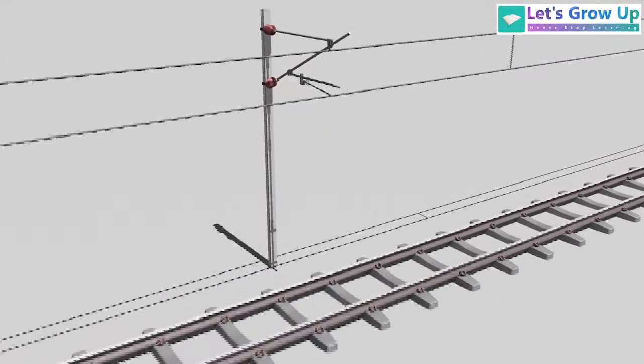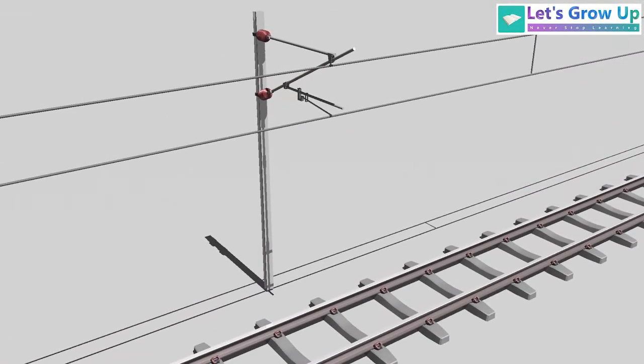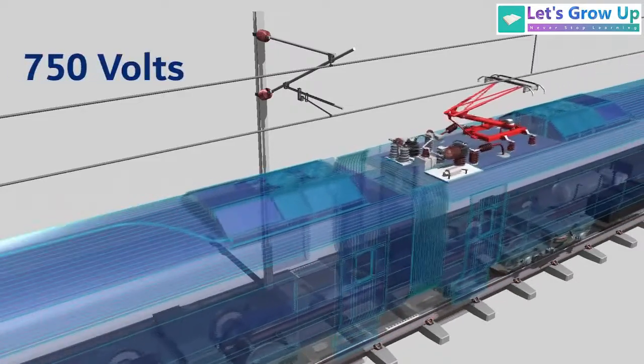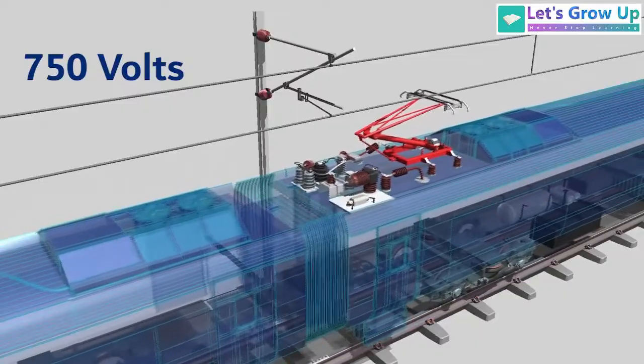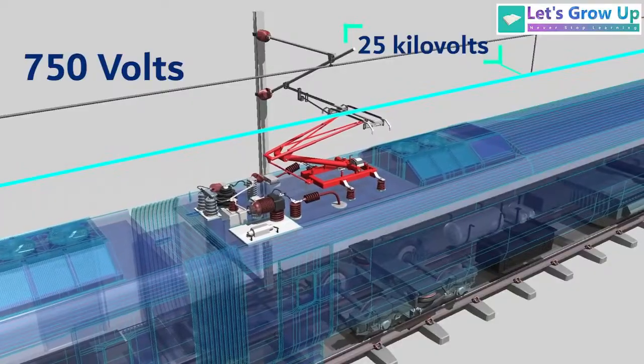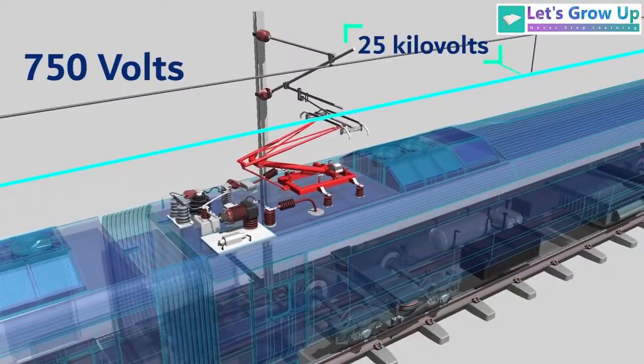In railway electrification systems, the standard voltage required for train operations is typically around 750 volts. However, the supply voltage is much higher in the overhead electrification OHE system, typically at 25 kilovolts.